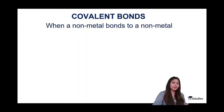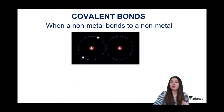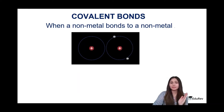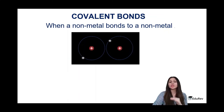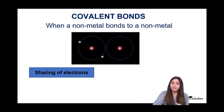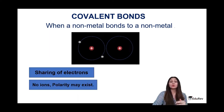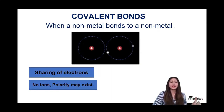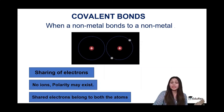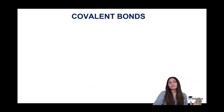A covalent bond is formed between a non-metal and a non-metal. There is no giving or taking of electrons — instead, we have sharing of electrons. The shared electron pair comes one from each atom, giving equal sharing between the two combining atoms. No ions are formed in covalent bonds, unlike in ionic bonds, though polarity may exist.